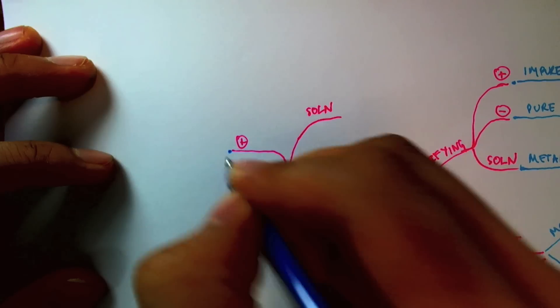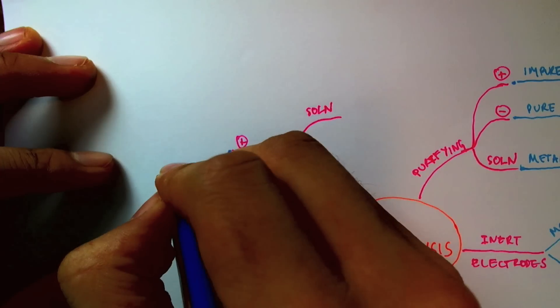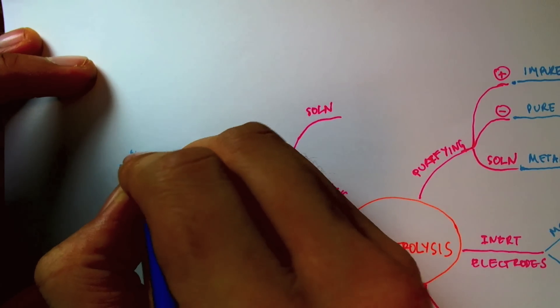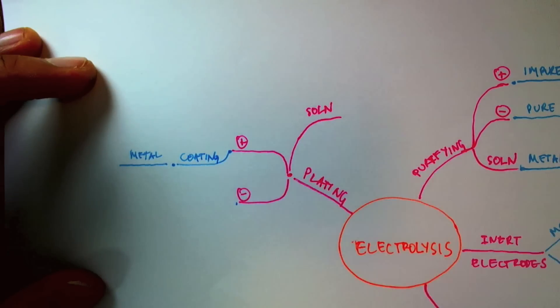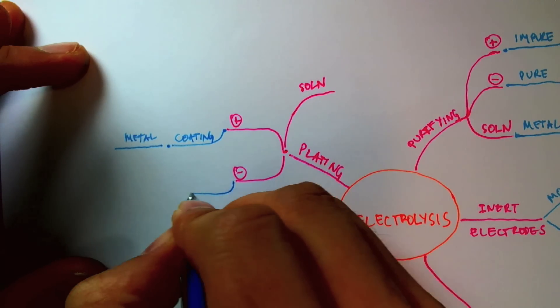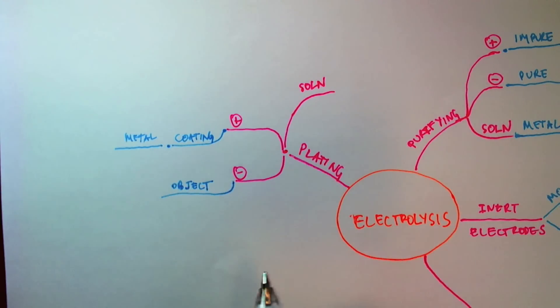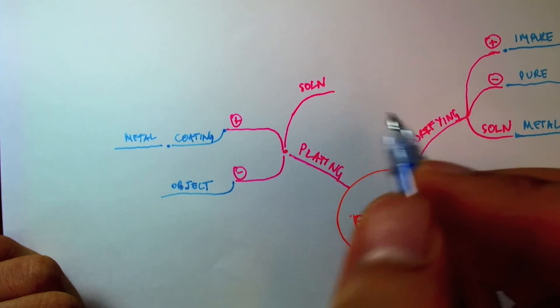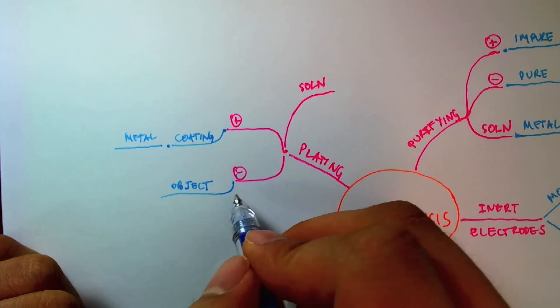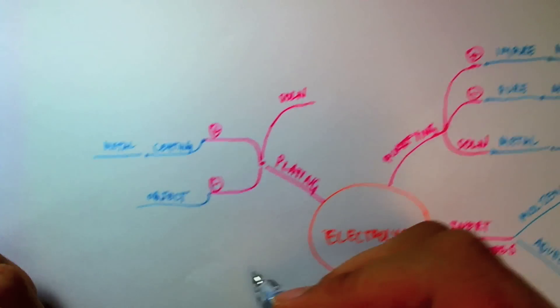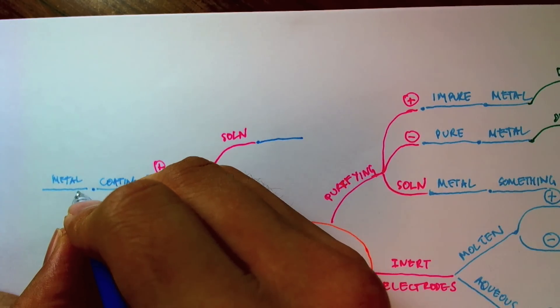So at the anode, we would put the metal that we're trying to coat with. So this would be metal coating. And at the cathode, we'd put the item we wish to coat. So the spoon was here, for example. And the metal ions would be attracted to the spoon because it's negative, and the metal ions are positive, and then the metal ions would be discharged and deposited on the spoon. And the solution had to be a solution of the metal that we are coating with.